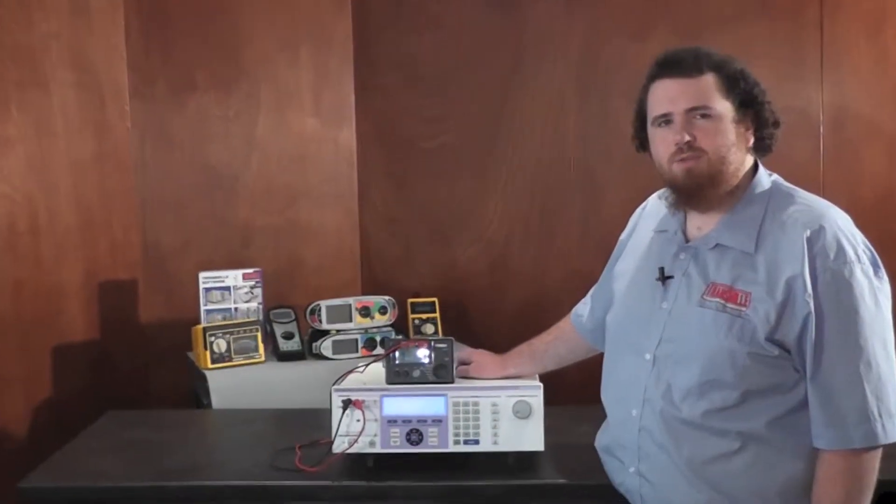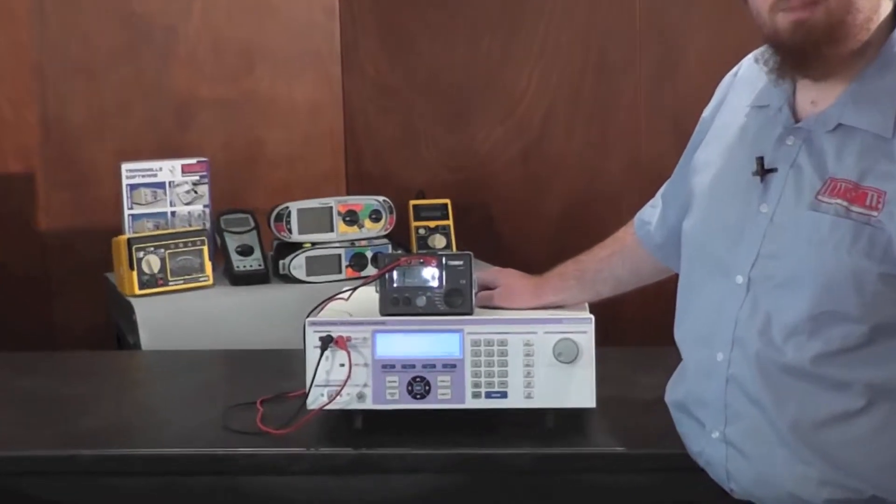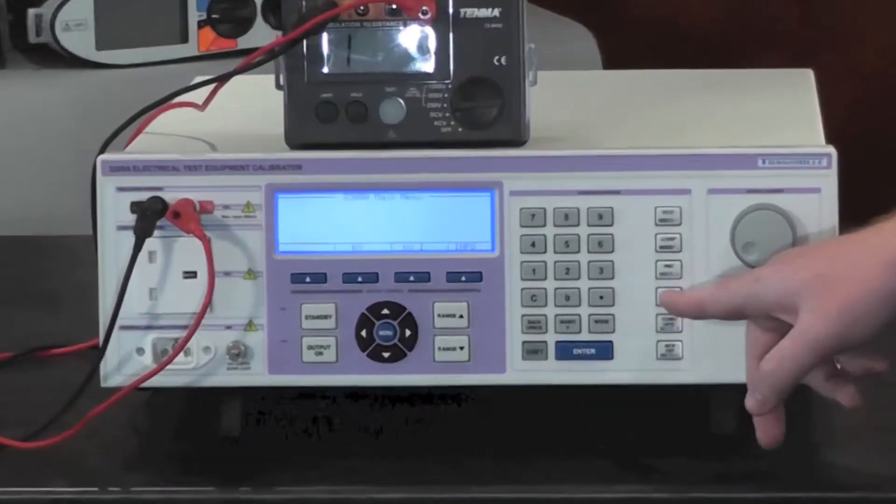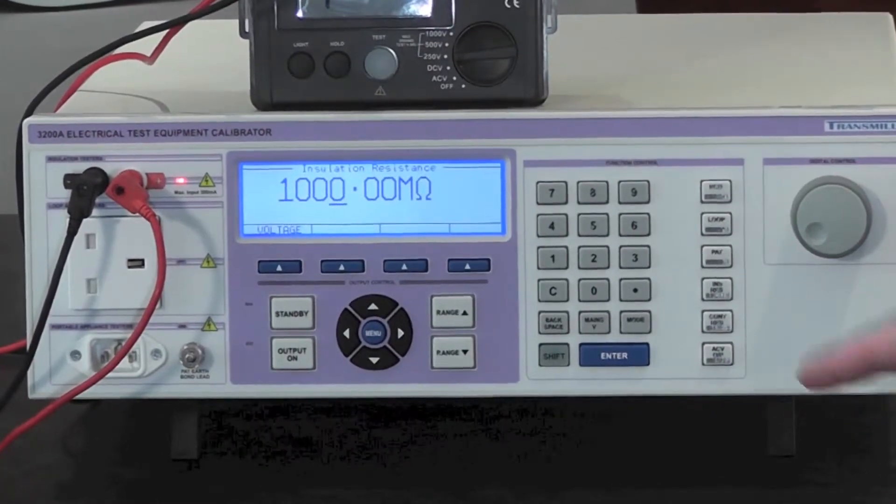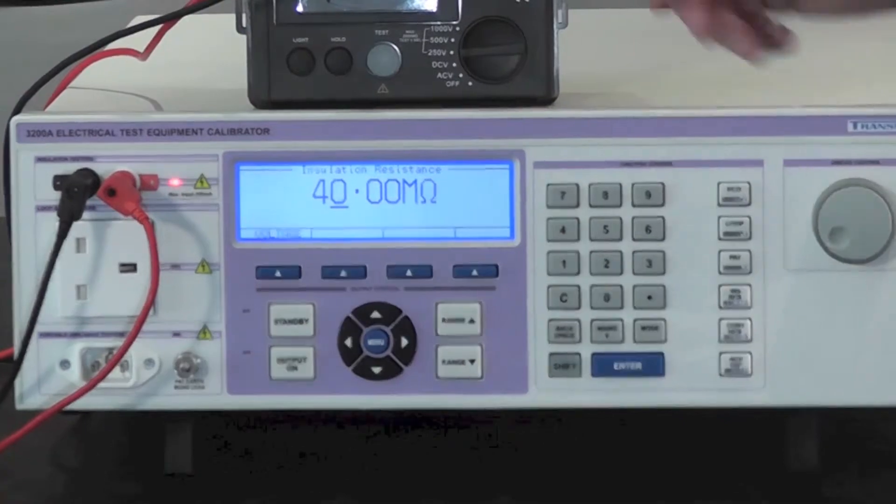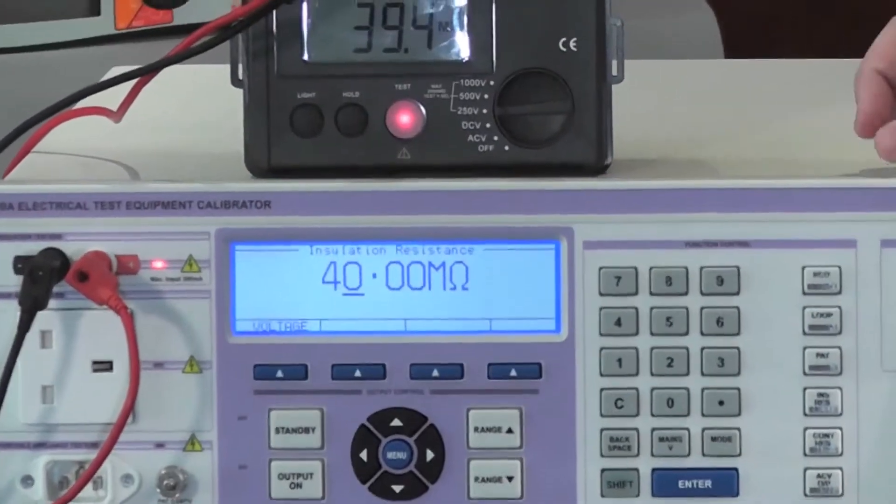Calibrating insulation testers with the 3200A couldn't be simpler. Simply select the insulation resistance function, enter the resistance required, for example 40 megaohms, and press the test bus button on the tester.